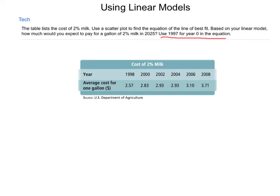First, 1997 is the year 0. So this becomes year 1, 3, 5, 7, 9, and 11. And if we go out to 2025, that becomes year number 28.